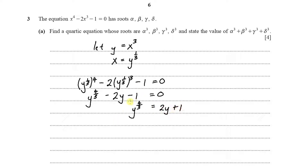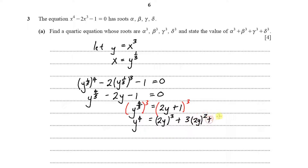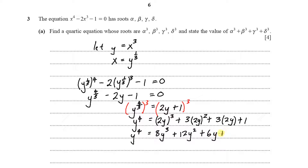We now cube both sides, raising to the power of 3. On the left side we get y to the power of 4. On the right side, expanding (2y plus 1) cubed gives 8y cubed plus three times four y squared plus six y plus 1, which simplifies to 8y³ plus 12y² plus 6y plus 1.